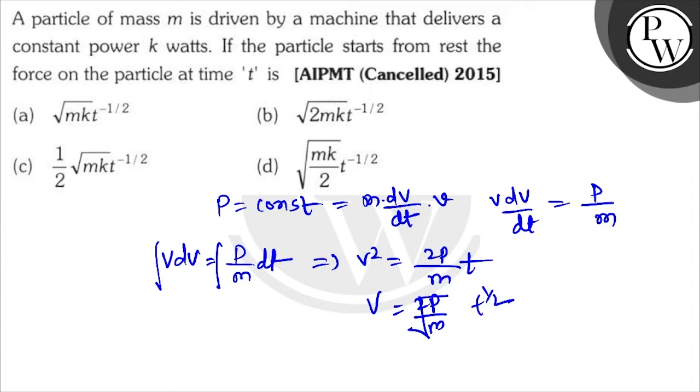If we take acceleration of the particle at time t, again dv by dt, that is equal to... root P, and t to the power half differentiation will give half t to the minus half. So the direct answer of the question, you can see, 1 by 2 will go under the root.